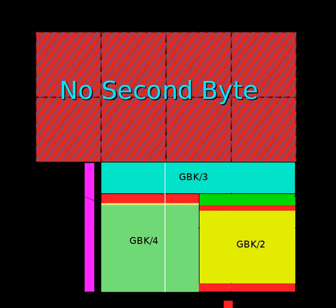An offset table is used in the WHATWG and W3C version of GB18030 to efficiently translate code points. ICU and GLIBC use similar range definitions to avoid wasting space on large sequential blocks.